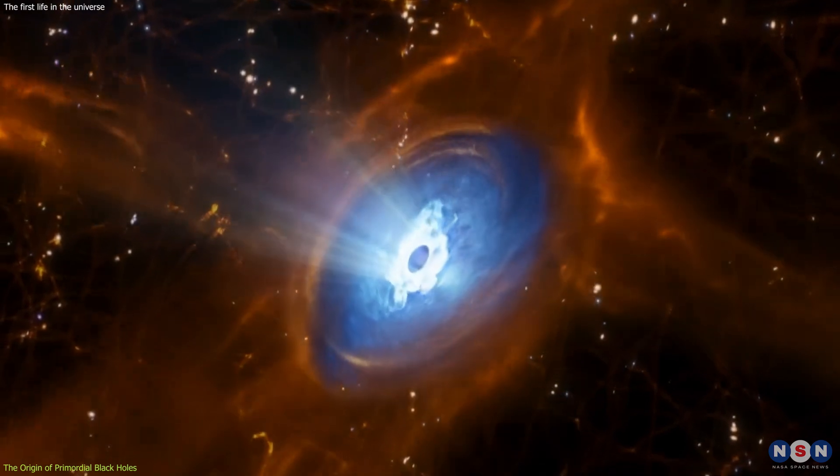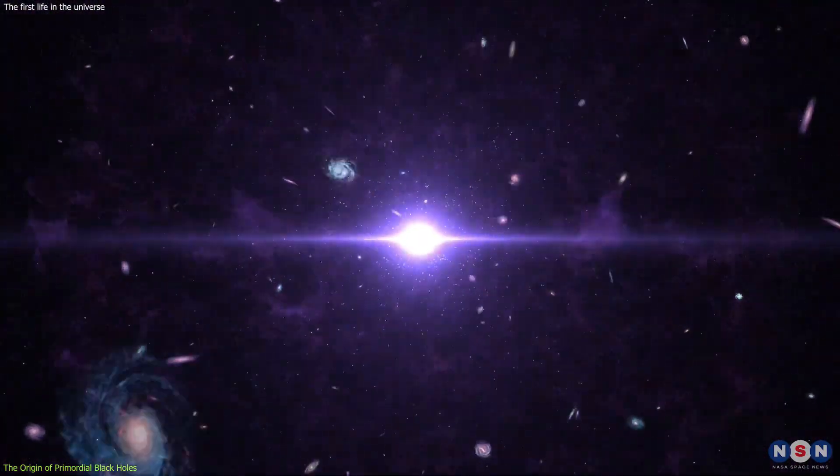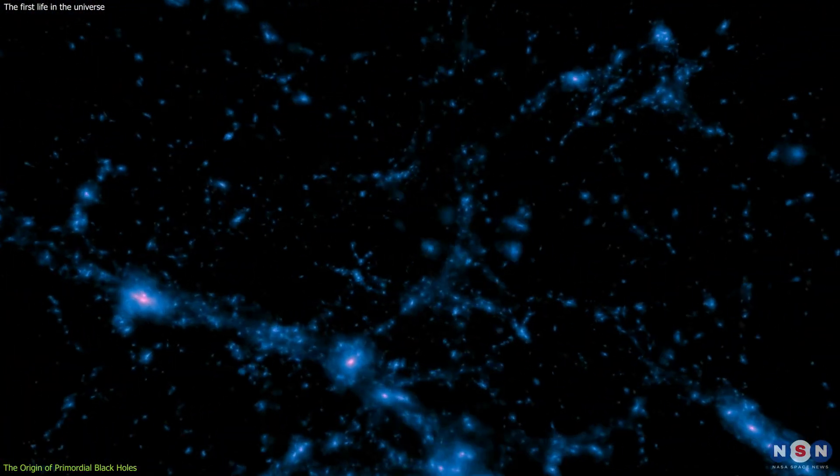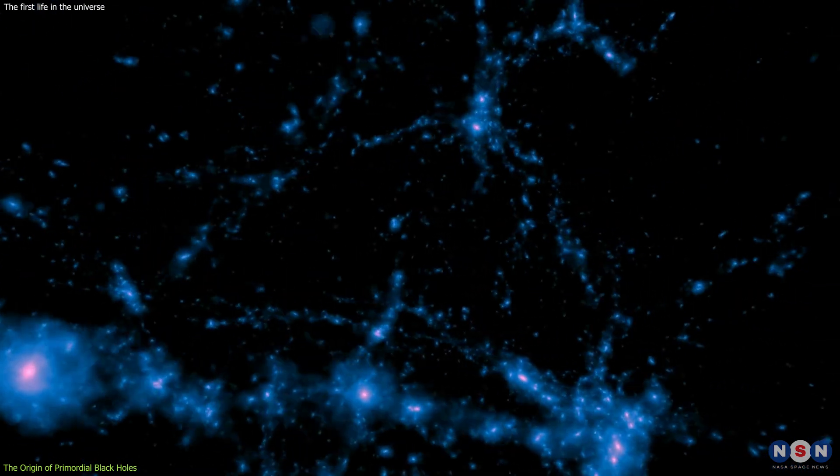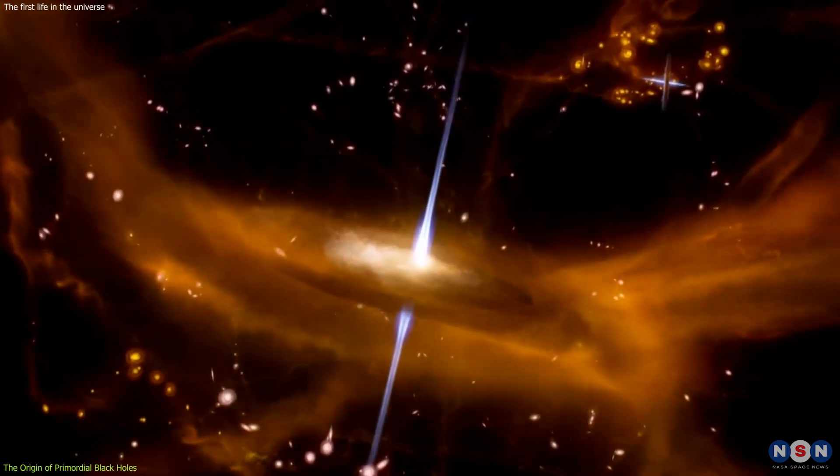Primordial black holes are hypothetical objects that could have formed in the very early universe, just fractions of a second after the Big Bang. According to some theories, the universe was filled with tiny fluctuations in density and pressure that could have collapsed into black holes under the influence of gravity.